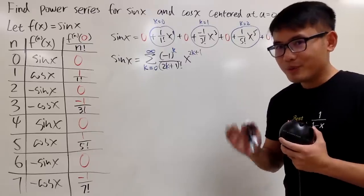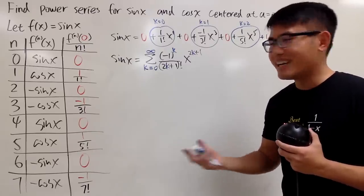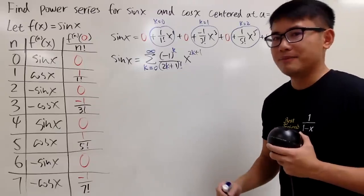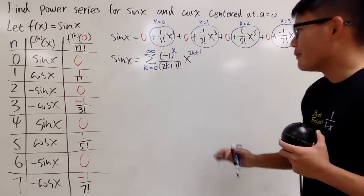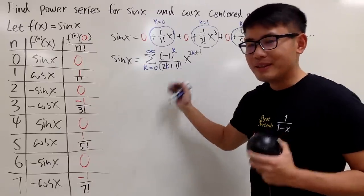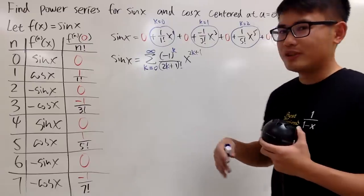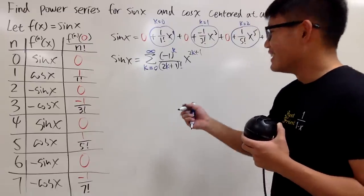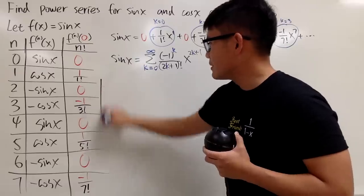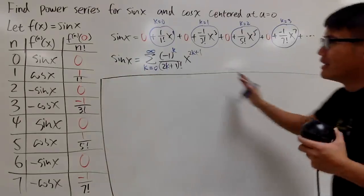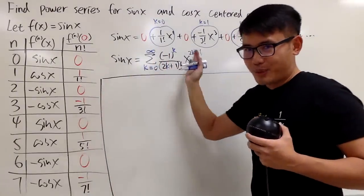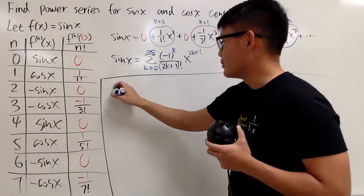However, usually, people still like to write down the power series with n. So, once you get this done, just ignore all the k's again and change them back to n. So, perhaps you can just imagine. This right here is my scratch work. In the end, this is what I will present to you guys.